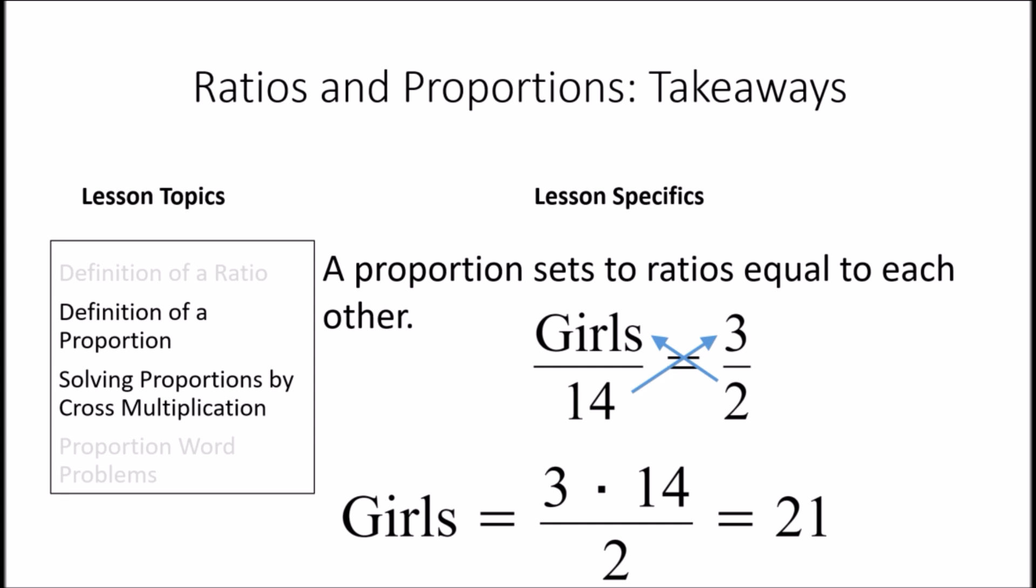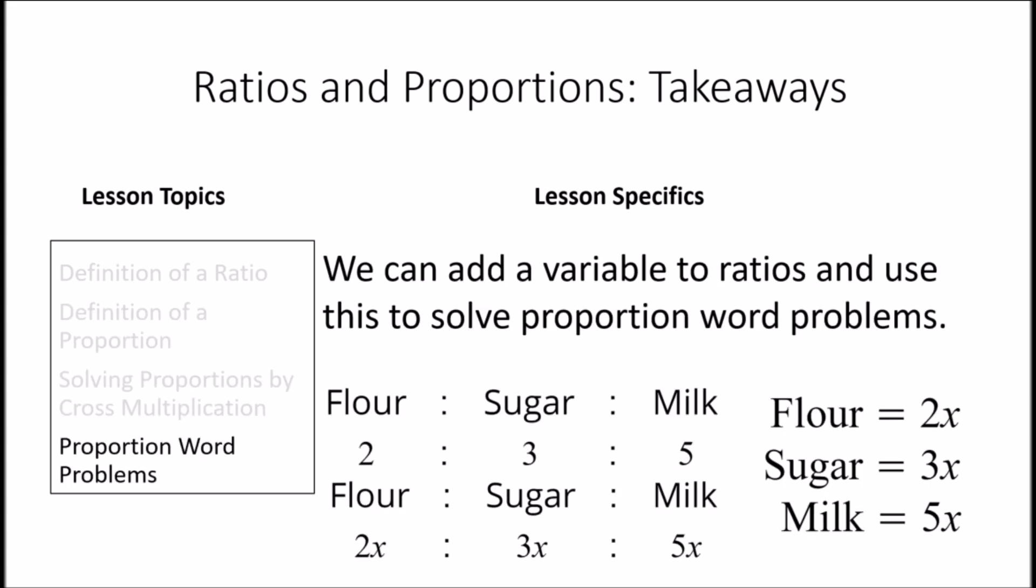For example here, if we know that there are 14 boys in the classroom, then we can use cross multiplication to see that the number of girls must be 21. Finally, we learned how to add a variable to ratios to help us solve proportion word problems. This is a very convenient way to translate a complicated sounding word problem into one that is more easily managed. Feel free to review this lesson again any time, and PrepScholar is rooting for you to succeed on test day.